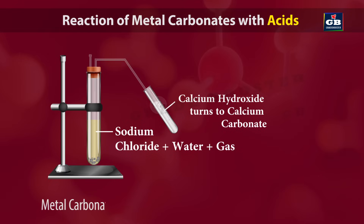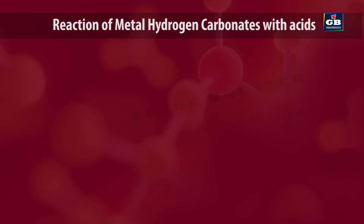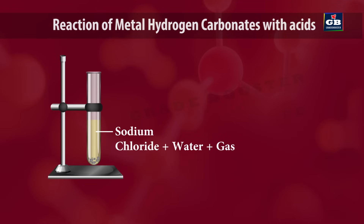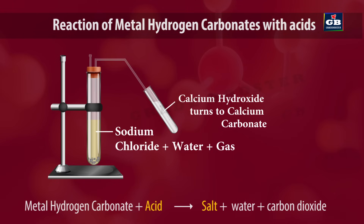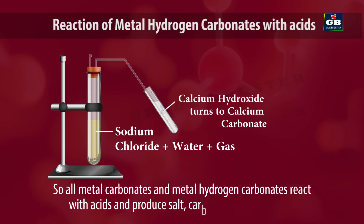So when a metal carbonate reacts with an acid, it gives rise to salt plus water plus carbon dioxide. Reaction of metal hydrogen carbonates with acids: Take 0.5 grams of sodium hydrogen carbonate and add 2 ml of dilute HCl. It forms sodium chloride, water and carbon dioxide gas. So all metal carbonates and metal hydrogen carbonates react with acids and produce salt, carbon dioxide and water.